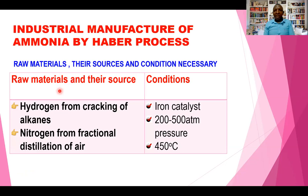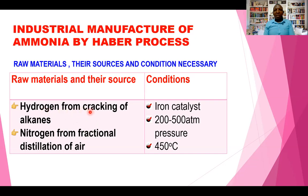The raw materials and their sources: one of the raw materials is hydrogen, which is obtained from cracking of alkanes. The other raw material is nitrogen, which is obtained from the fractional distillation of air. So the two raw materials are hydrogen, obtained from the cracking of alkanes, and nitrogen, obtained from the fractional distillation of air.